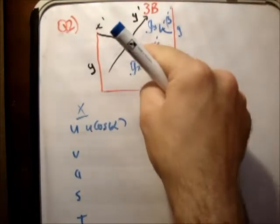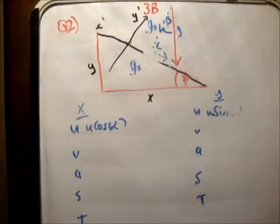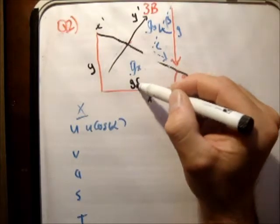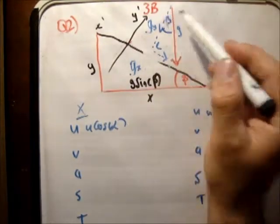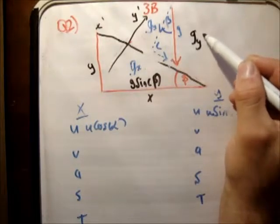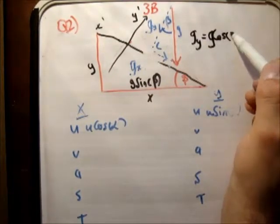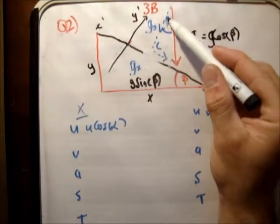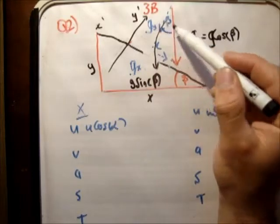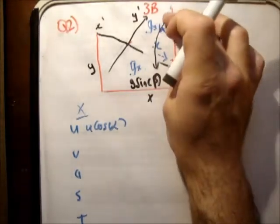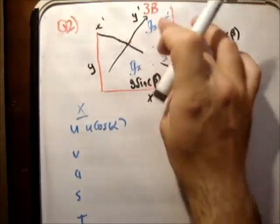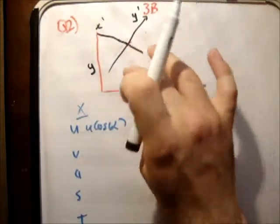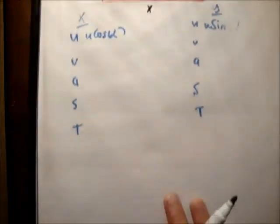What that means is that g_x is equal to g times the sine of beta, because that's the opposite angle. And g_y is equal to g cos(beta). Does that make any sense? Opposite is this direction here, so that gives sine. And adjacent is that one there.